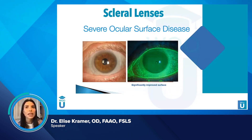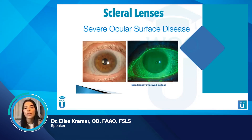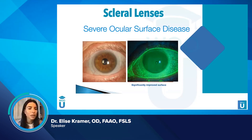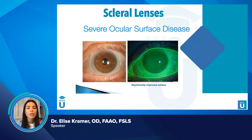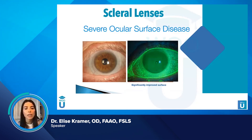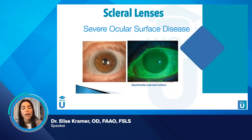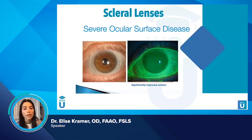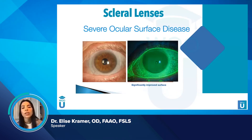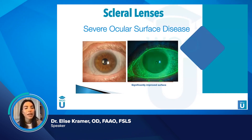So while we can treat the ocular surface with a scleral lens, we still have to treat the eyelid. We really have to maximize eyelid health in these patients. I will never fit a scleral lens on a patient without looking at their meibomian glands, and I encourage all scleral lens practitioners to do the same — because it is so common today and it absolutely has to be addressed.